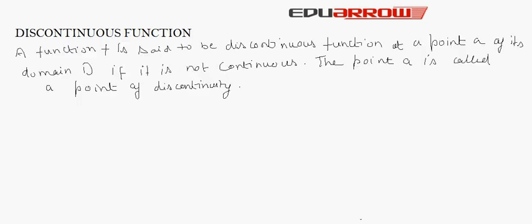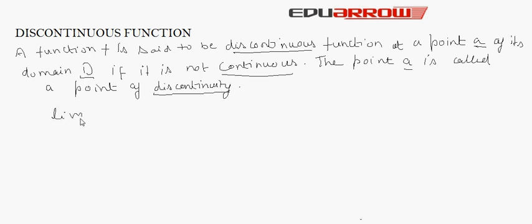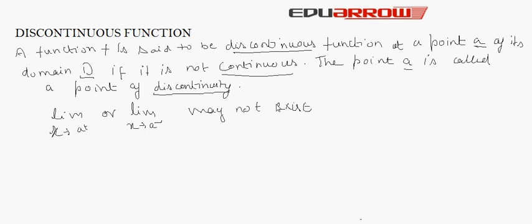Next we come to discontinuous functions. A function f is said to be a discontinuous function if it is not continuous at a point a of its domain. The point a is called the point of discontinuity. In other words, a function which is not continuous is a discontinuous function. Discontinuity may arise if the limit as x tends to a from the positive or negative side may not exist.